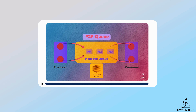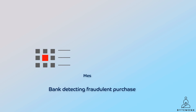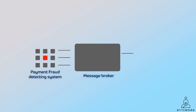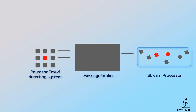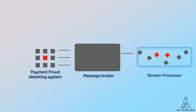Finally, message brokers are designed to be reliable and scalable — they can handle large volumes of messages and recover from failures. In our example of a bank detecting fraudulent purchases, the payment fraud detecting system acts as a producer and distributes order events to a stream processor. The stream processor analyzes the order events in real time to identify fraudulent orders. If a fraudulent order is identified, it publishes a notification to the message broker, which then delivers the notification to the payment fraud detection system.